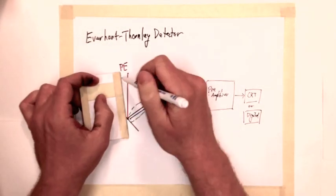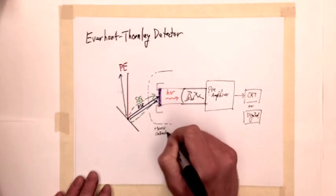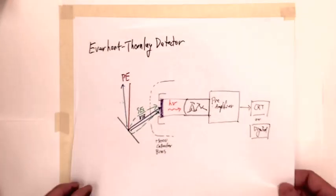Traditionally, image formation was done by feeding the electrical signal output to a rastered cathode ray tube, but modern systems mostly use digital displays.